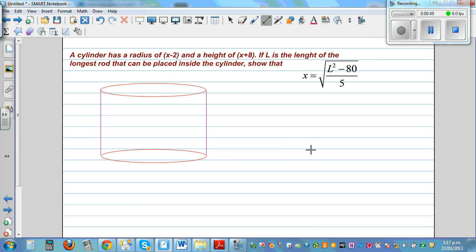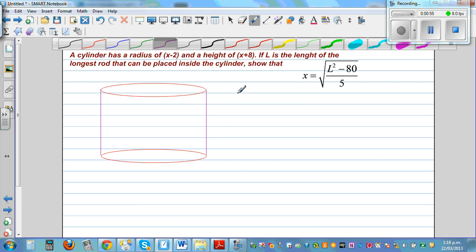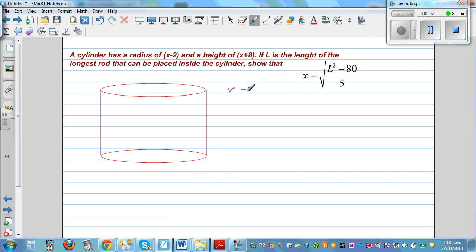Okay, so what do we know? The radius is, so let's write what is given. The radius r is equal to x minus 2. And the height, so what does this mean? So the diameter is 2 times the radius, so it is 2 times x minus 2. Let's simplify, so this is 2x minus 4. And the height is x plus 8.